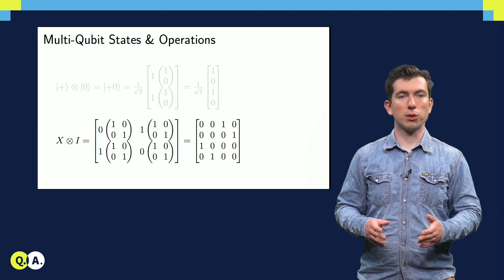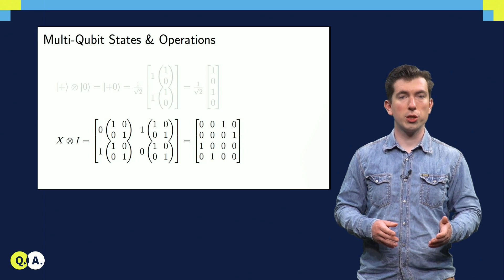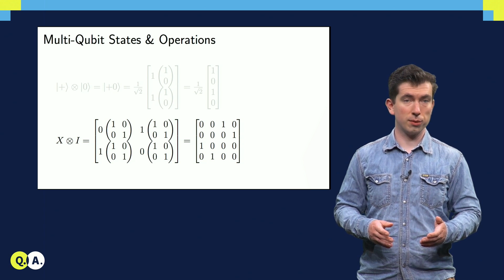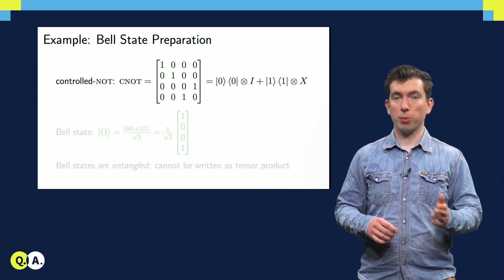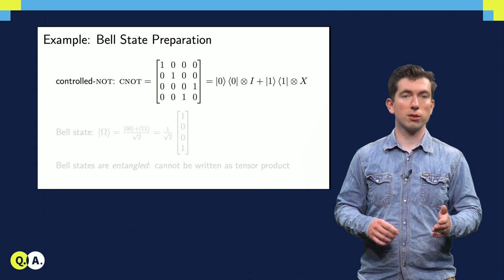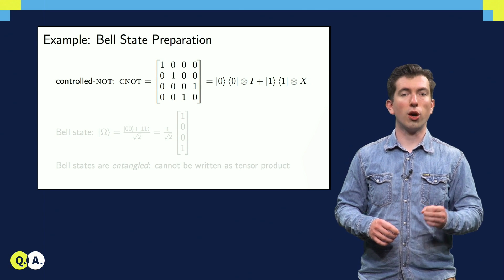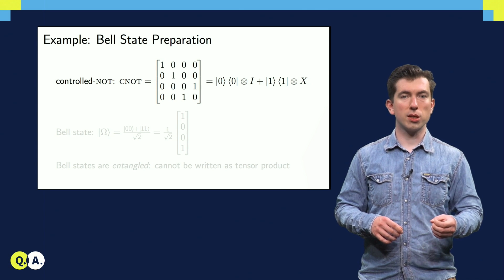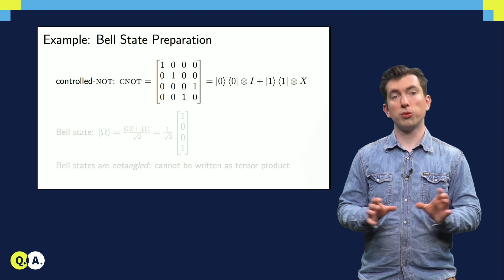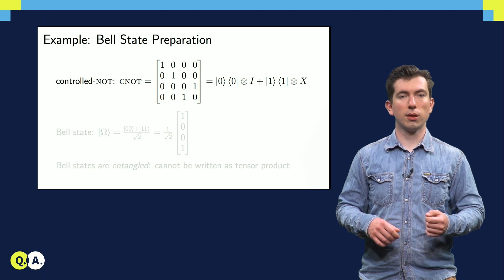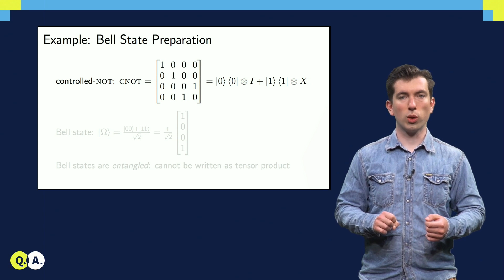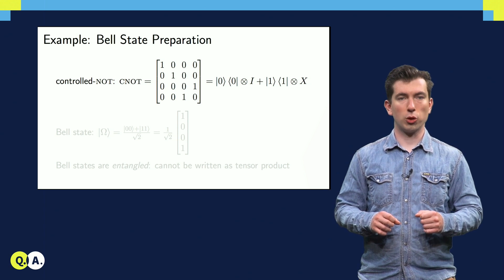Now that we've seen the basic formalism and notation, we're ready to calculate the results of a small sequence of quantum operations which prepares a Bell state. First, we introduce a two-qubit gate which cannot be written as a tensor product of one-qubit gates, the controlled NOT, or CNOT for short. As we can see, it can be decomposed into a sum of two tensor products that says if the first qubit is in the zero state, do the identity, and if the first qubit is in the one state, perform an X on the second qubit.